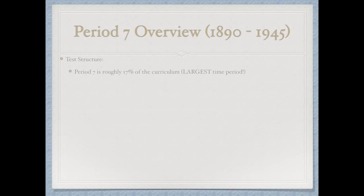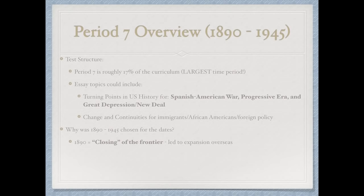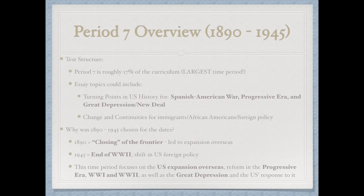Let's jump to Period 7, which is 17% of the curriculum — by far the largest time period. Essay topics could include turning points such as the Spanish-American War, the Progressive Era, and the Great Depression or New Deal, as well as continuities for immigrants, African Americans, and foreign policy. Period 7 runs from 1890 to 1945. 1890 marks the closing of the frontier, leading to overseas expansion, and 1945 marks the end of World War II. This period focuses on overseas expansion, Progressive Era reforms, World War I, World War II, the Great Depression, and the US response to it.